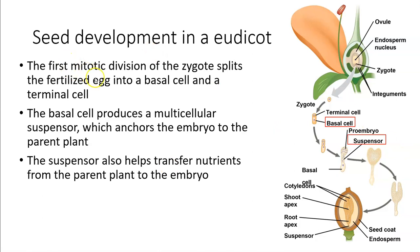First, there is a first mitotic division of the zygote. After the egg is fertilized by the sperm, the zygote splits into a basal cell and a terminal cell. Take a look at the diagram on the right of this generic flowering plant — assume there was successful fertilization, here's the zygote within the ovary. The basal cell produces a multicellular suspensor, which is going to help anchor the embryo to the parent plant.